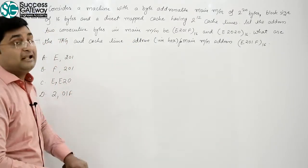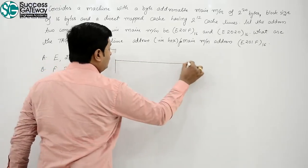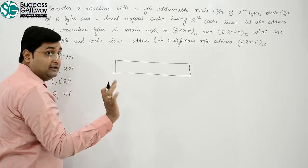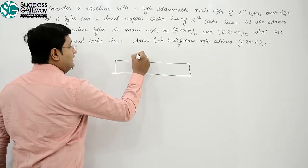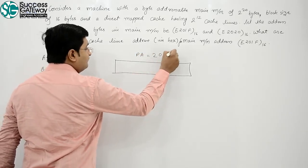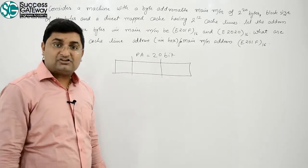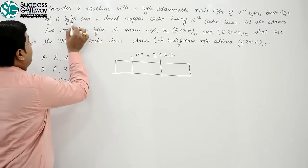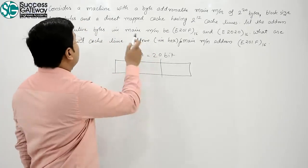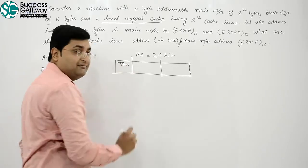Now, 2^20 bytes. Akal 2ki power 20 bytes hai, to point a 1 byte, we need physical address 20 bits. This 20 bit is divided into 3 section because of direct map cache. It is a direct map cache. Direct map cache, 3 parts mein divide karta hai.